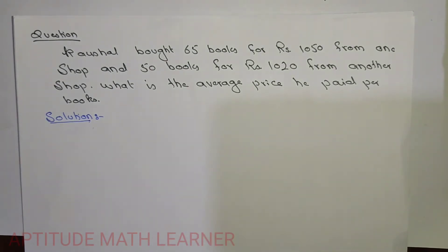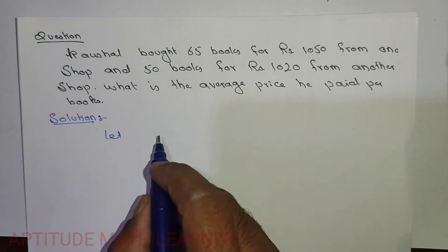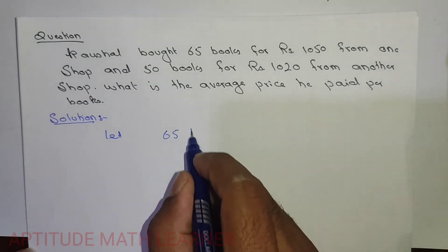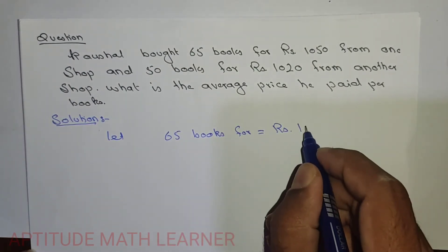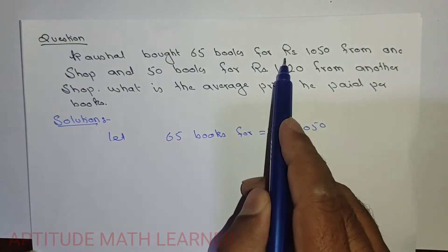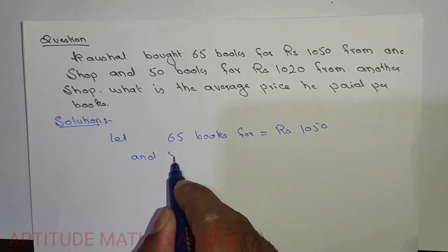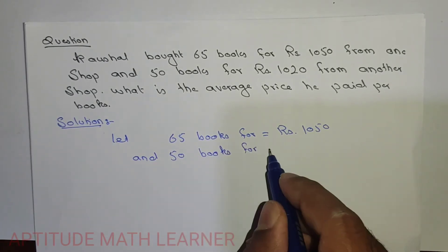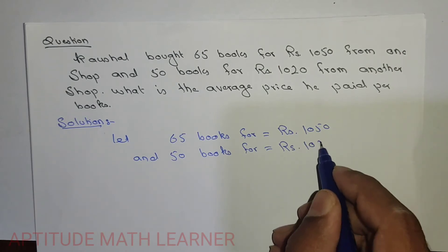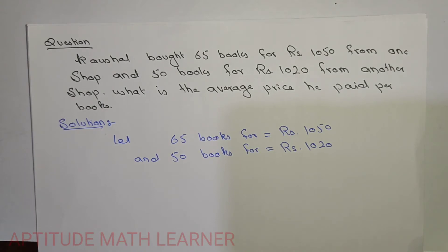Let's solve this. We are having 65 books for rupees 1050 and 50 books for rupees 1020 from another shop. So what is the average price he paid per book? We have to find the average price per book.